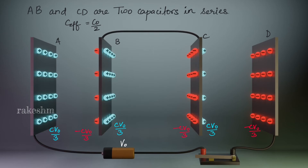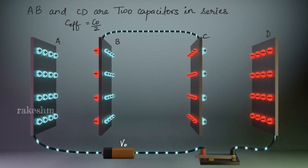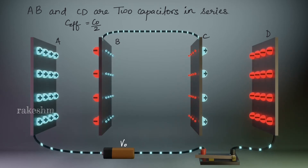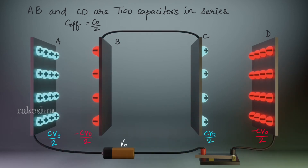In our new circuit, AB and CD are two capacitors in series, and the effective capacitance of this system is C0/2. So now there will be redistribution of charges. On A the charge is CV0/2, on the left side of B we have minus CV0/2, and on these two inner sides the charge is zero. On C and D we will have CV0/2 charge.